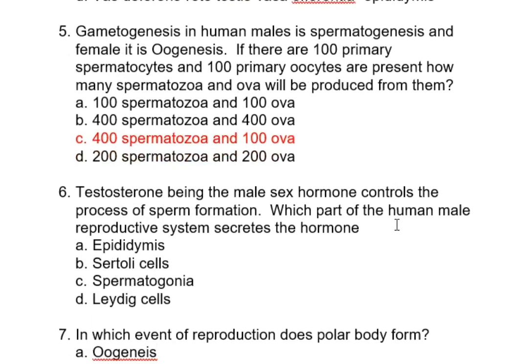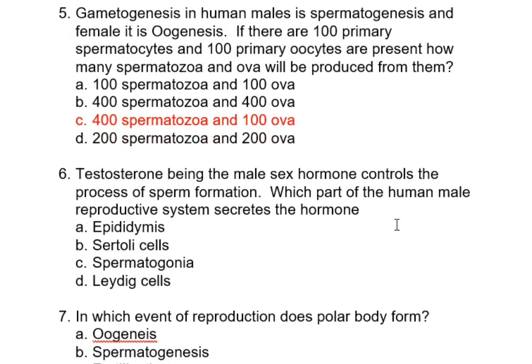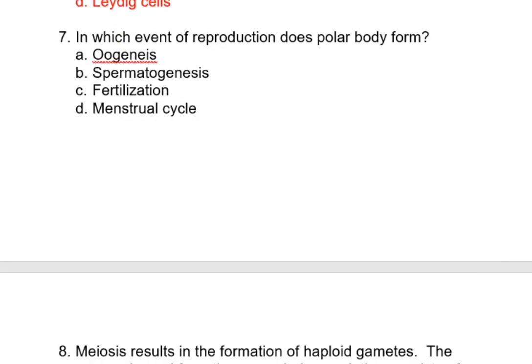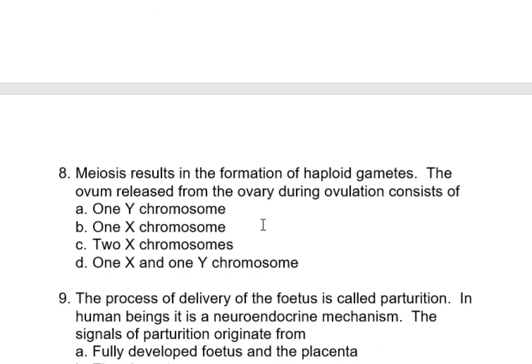Testosterone, the male sex hormone, controls the process of sperm formation. Which part of the human male reproductive system secretes this hormone? Testosterone is secreted by the Leydig cells. Which event of reproduction does polar body formation correspond to? Polar body is formed during oogenesis.